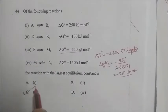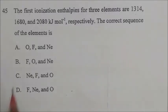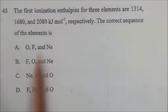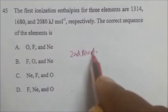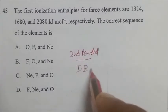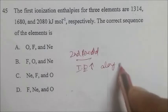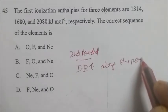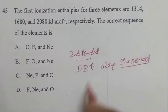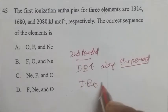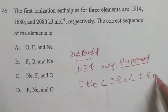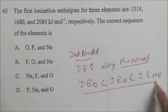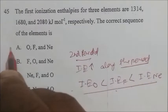The first ionization enthalpy of three elements is given. These elements are from the second period. Ionization energy increases along the period, so the order is: ionization energy of O < ionization energy of F < ionization energy of Ne. The order matches option E, which is the correct answer.